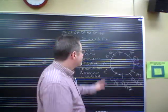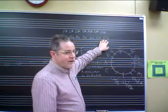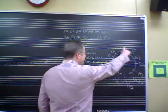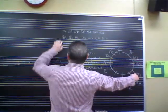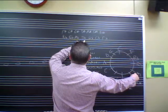Each of these corresponds to a number of flats. So if I have the key of A-flat, that's four flats: B-flat, E-flat, A-flat, and D-flat is the key signature.